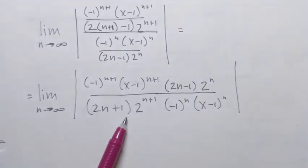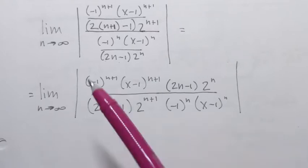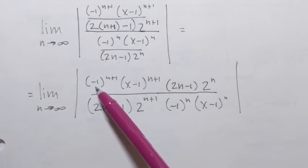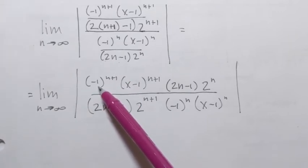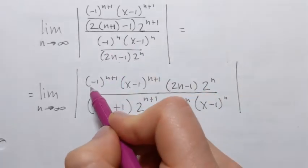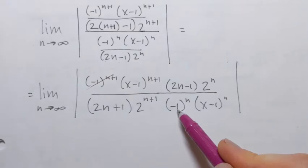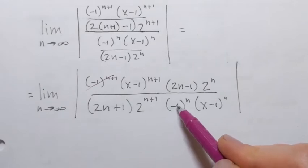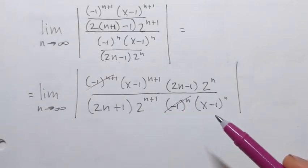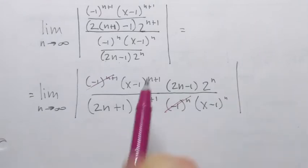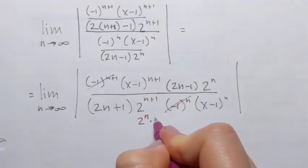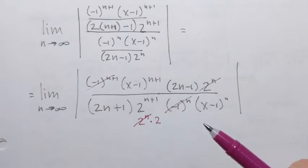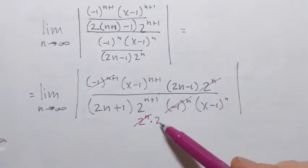Now I simplify further. Applying absolute value to negative 1 to any power gives 1, so both negative 1 factors disappear. Then 2 to the power n plus 1 can be written as 2 to the power n times 2, so the 2 to the power n factors cancel, leaving just the constant 2.